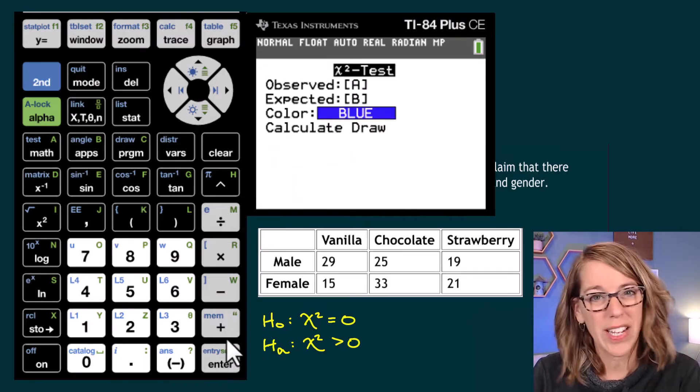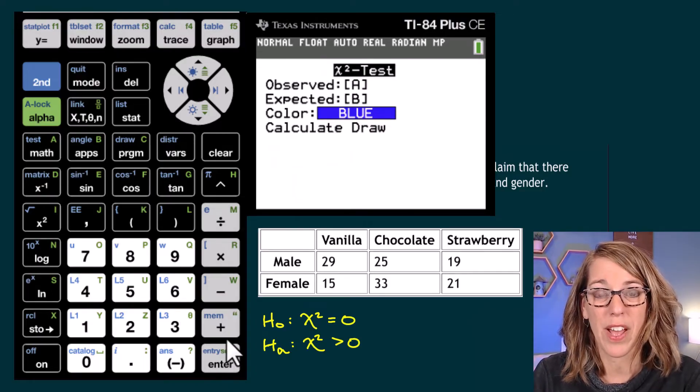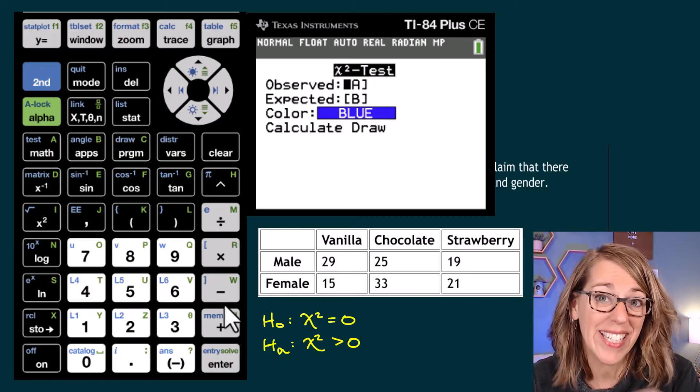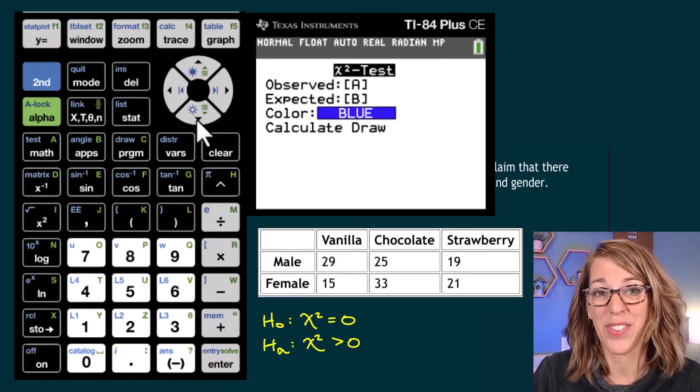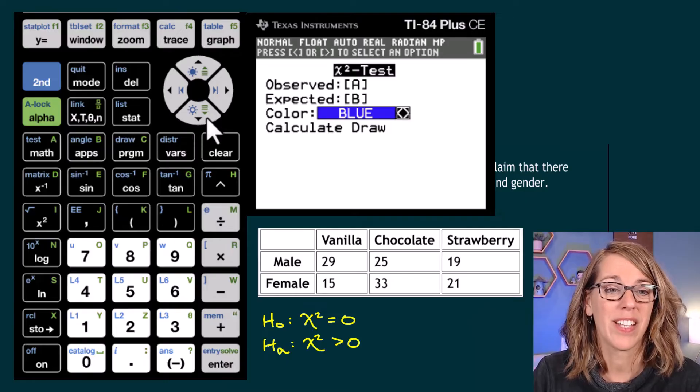Notice that it's checking to make sure that you did put your observed values in matrix A. And I did. And it's also telling us that it's going to put the expected values into matrix B. Let's go ahead and calculate.